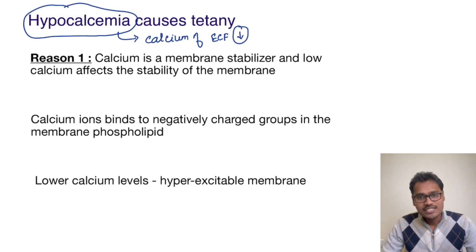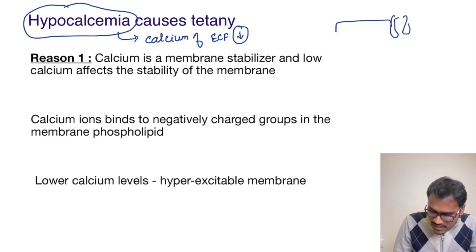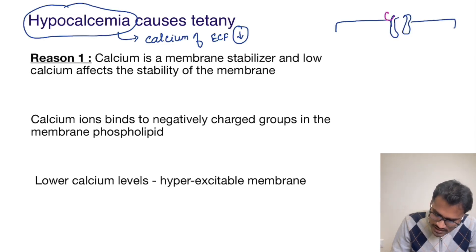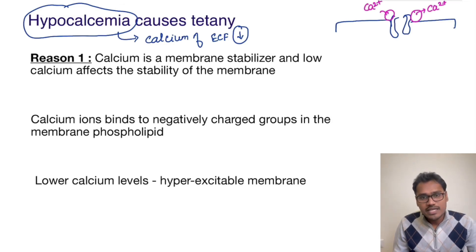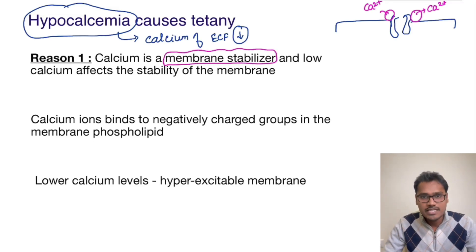Let's see the property of calcium which is outside the membrane. Suppose we have a membrane with phospholipids and ion channels — this calcium has the property to go and bind to these phospholipids. If there is availability of calcium, it goes and binds to these phospholipids and stabilizes the membrane. So calcium is actually a membrane stabilizer; that is, the ECF calcium is a membrane stabilizer.